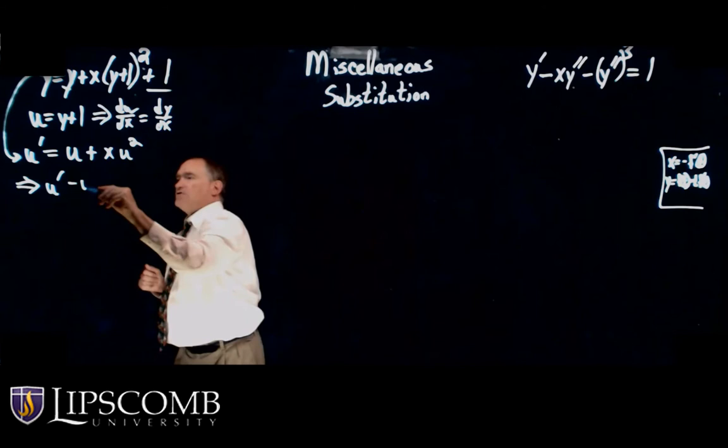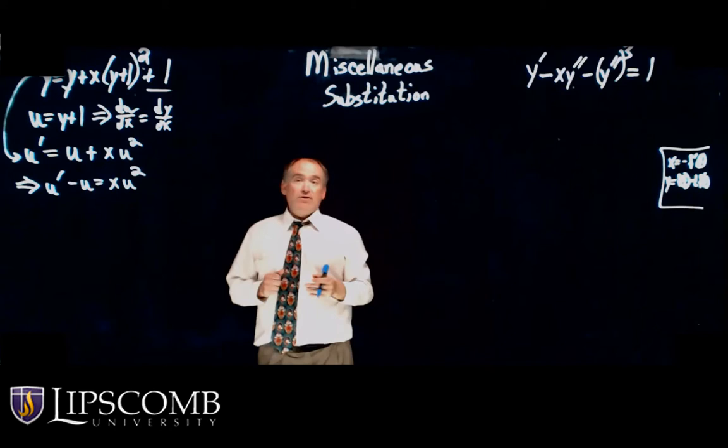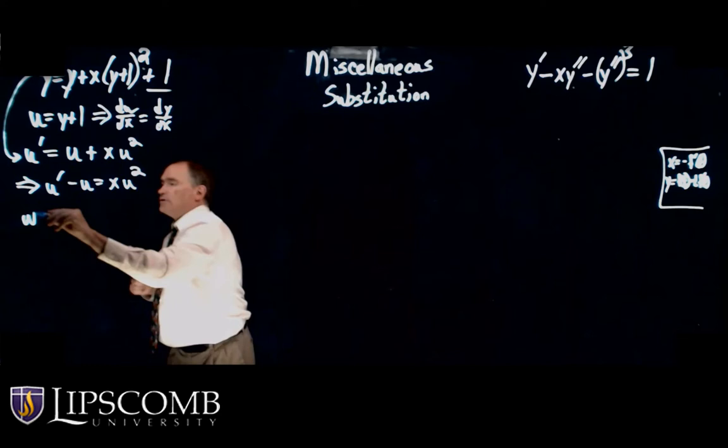If u equals y plus 1, then du/dx equals dy/dx plus 0, since the derivative of a constant is 0. So using this substitution, u prime becomes u plus x times u squared. Moving it around, I get u prime minus u equals x times u squared. Now I have it in the form of Bernoulli's equation.